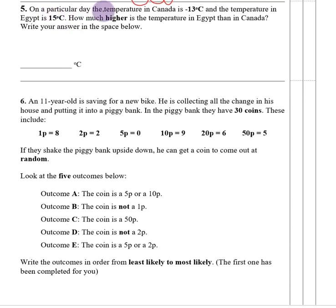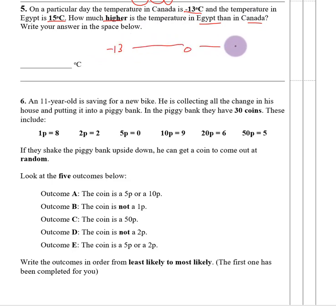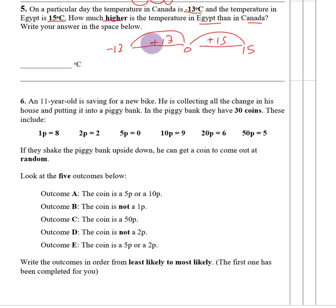Number five. On a particular day the temperature in Canada is minus 13 degrees and in Egypt it is 15 degrees. How much higher is Egypt than Canada? Canada is at minus 13, zero is in the middle, and Egypt is at 15. To get from minus 13 up to zero you add 13, then from zero up to 15 you add 15. So 15 add 13 gives us the difference of 28 degrees.